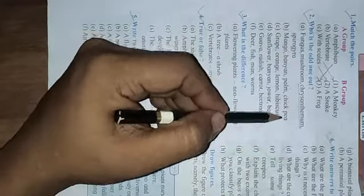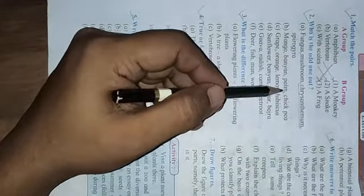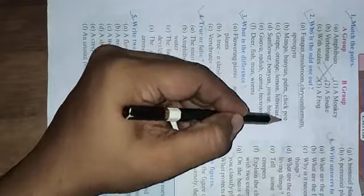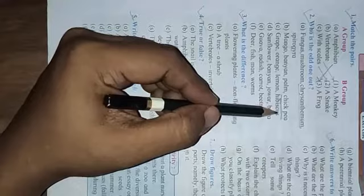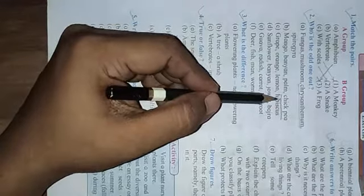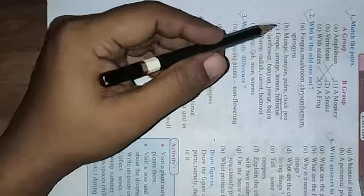Mango, banyan, palm, chickpea. Here all are plants. This one is what? Shrub. Grass, orange, lemon, hibiscus. All are shrubs. I think shrub. But grass is what? Creeper. So this is odd one out.